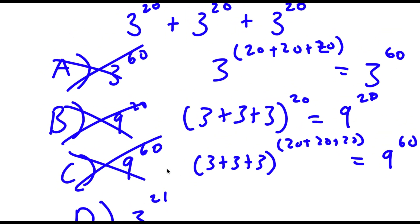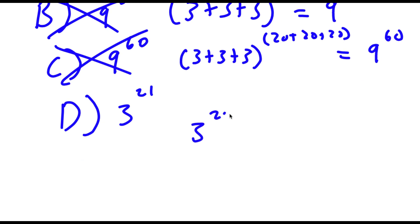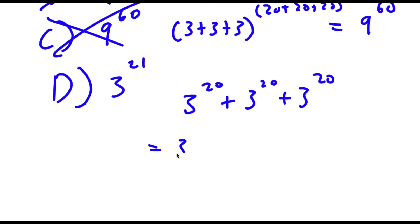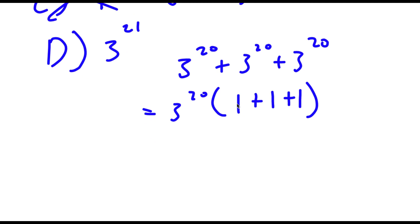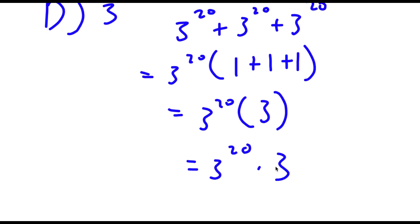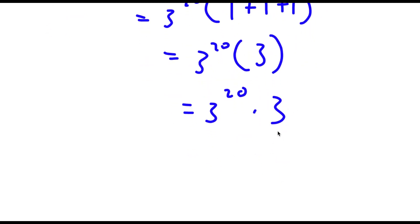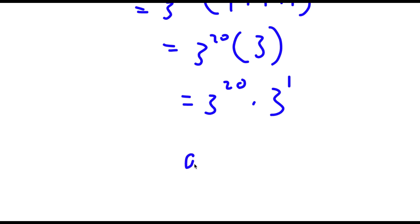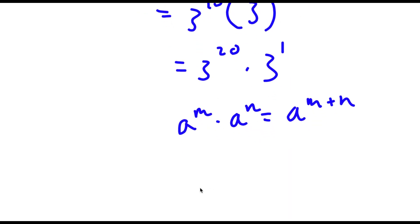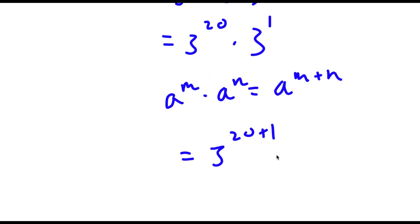So now for our final answer, which is the right answer — start with 3 to the power of 20 plus 3 to the power of 20 plus 3 to the power of 20. From here, I'm going to factor out 3 to the power of 20. So now I have 3 to the power of 20 times 1 plus 1 plus 1. If I simplify inside the parentheses, I get 3 to the power of 20 times 3. Now 3 is the same thing as 3 to the power of 1. Using the property a^m times a^n equals a^(m+n), this equals 3 to the power of 20 plus 1, which is 3 to the power of 21. So this is my answer.